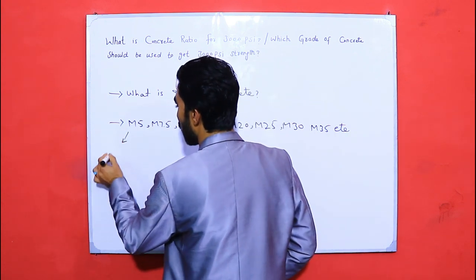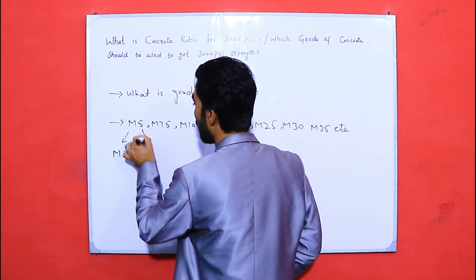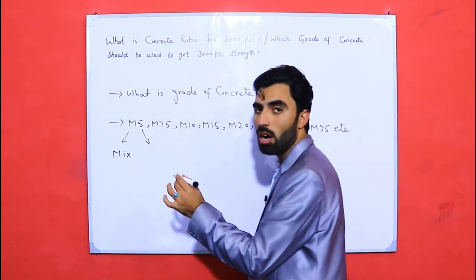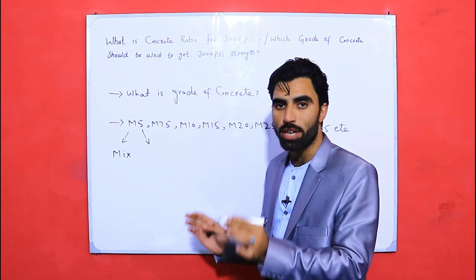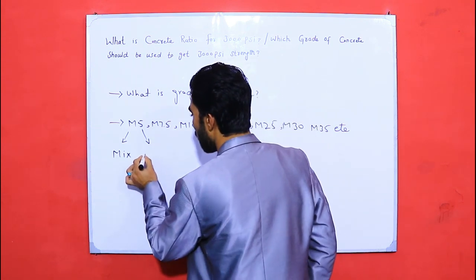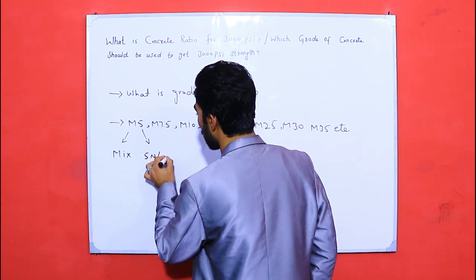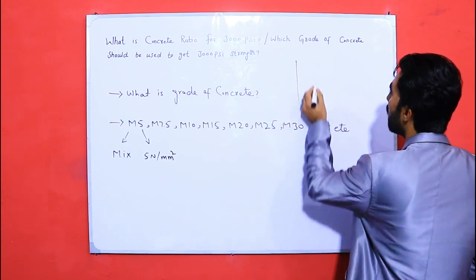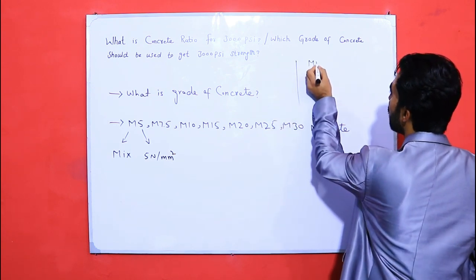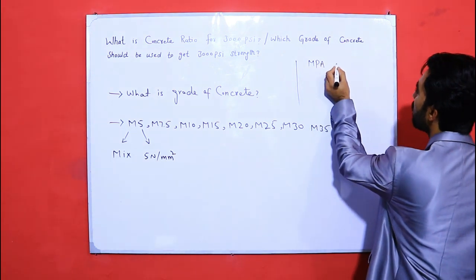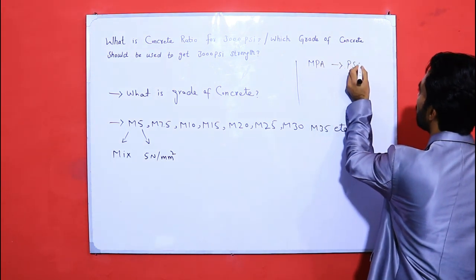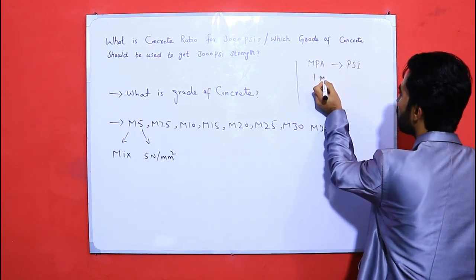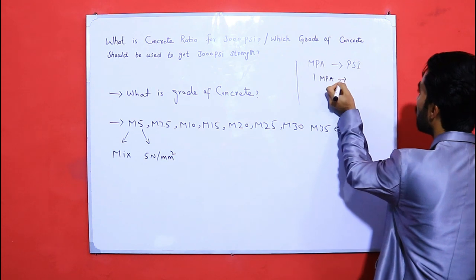Let me define what 'M' means. M stands for mix, and the number represents the compressive strength of concrete after 28 days. For example, M5 means 5 Newton per mm² is the compressive strength of that concrete.